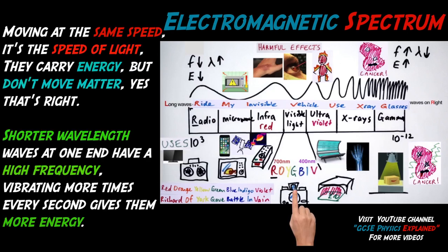Moving at the same speed, it's the speed of light. They carry energy but don't move matter, yes that's right. Shorter wavelength waves are worn and have a high frequency, vibrating more times every second gives them more energy.